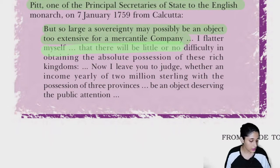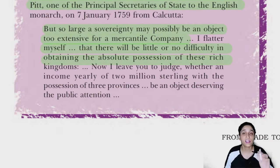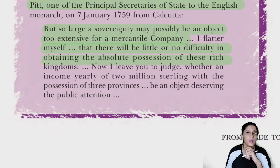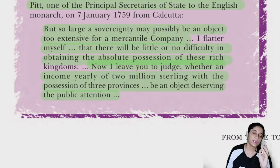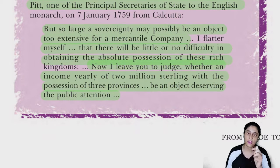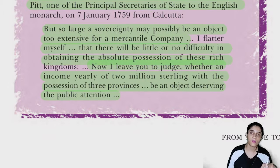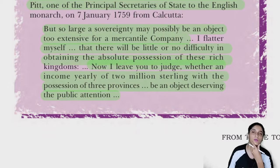Clive wrote: 'I flatter myself that there will be little or no difficulty in obtaining the absolute position of these rich kingdoms. I leave you to judge whether an income yearly of 2 million sterling with the possession of three provinces be an object deserving the public attention.' Robert Clive ka matlab tha ki salana 20 lakh pound sterling ki income aur 3 provinces ki power — yeh Britishers ke saamne ek galat tariqe se dikhaayi jaane waali cheez nahi hai. Agar East India Company Bharat ko hadapne ka prayas kar rahi hai, toh Britishers ko koi nuksaan nahi — eventually fayda hi ho raha hai.